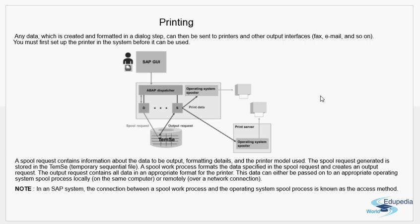The output request contains all the data in an appropriate format understood by the printer. This output request is sent to the operating system spooler where the actual print system is. It can be local — meaning the operating system spooler is on the same host as the SAP system — or remote, meaning the operating system spooler is on a different host. The distinction of local or remote is not about the physical printer but depends on where the operating system spooler resides.